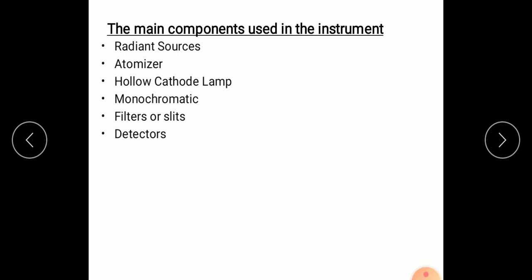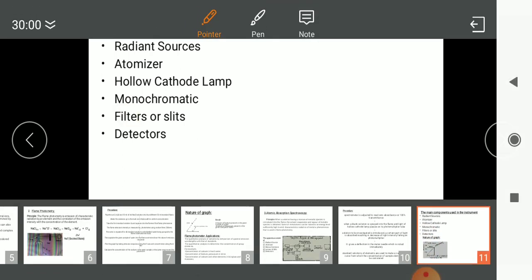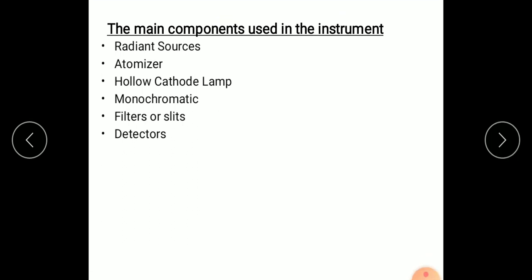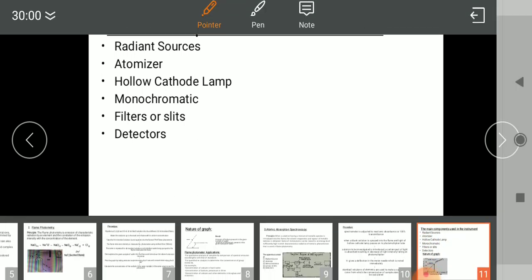Next is monochromator. Generally gratings and prisms are used as monochromators. The fourth one is filters or slits. The filters or slits are used for isolation of required spectral lines. Filter photometers are used for determination of sodium, calcium, potassium, magnesium and other metals. Last one is detector. Detectors are photomultipliers. In some instruments two filters and two detectors are used for fluctuation in the source. So this is about the main components used in the instrument.